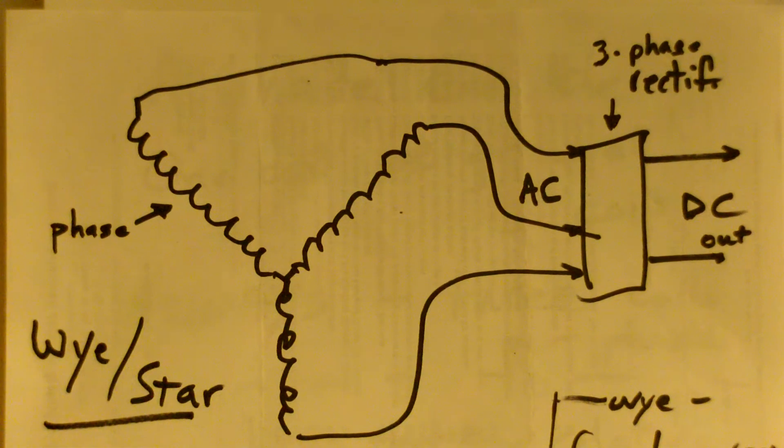So, the most common stator configuration is the Y/star. It consists of three phases, or three coils per phase. Obviously, if you have one coil, you have one phase, and you have no alignment issues.